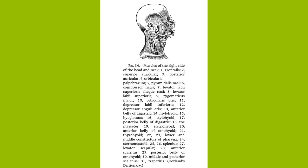The second vertebra, or axis, has surmounting the body the odontoid process, with a facet in front for articulation with the atlas and one behind for the transverse ligaments to move over. The seventh cervical vertebra, or vertebra prominens, has a very long spinous process, hence its name, to which is attached the ligamentum nuchae. It can be felt very distinctly on the living.